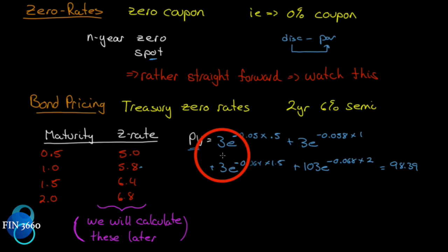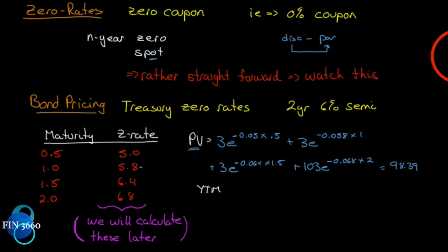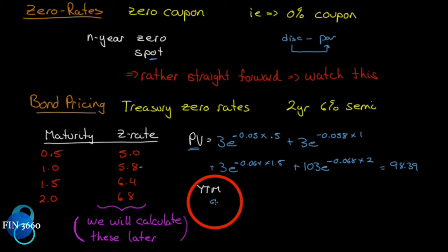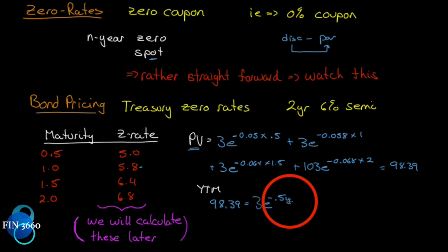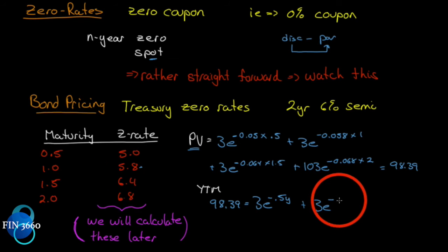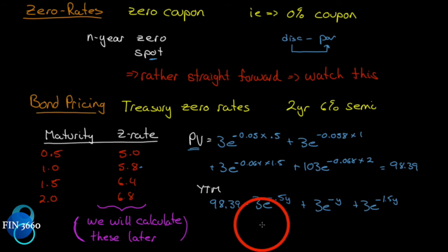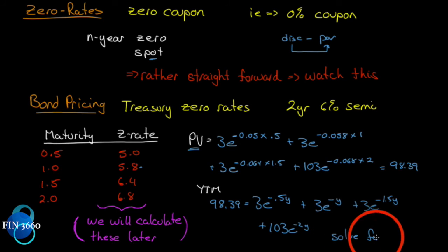Now let's say instead you wanted to find the yield to maturity. Yield to maturity means you equate the present value — we know it's 98.39 — equal to 3·e^(−0.5y) + 3·e^(−y) + 3·e^(−1.5y) + 103·e^(−2y), and you solve for y.